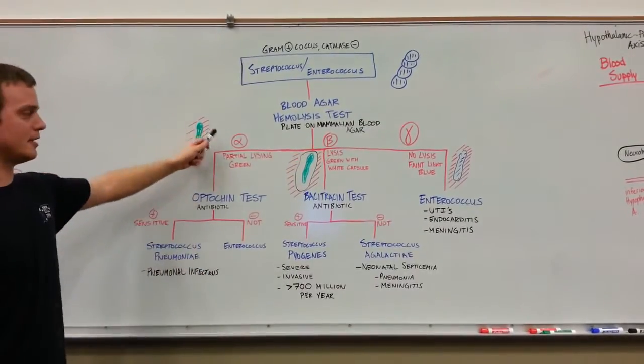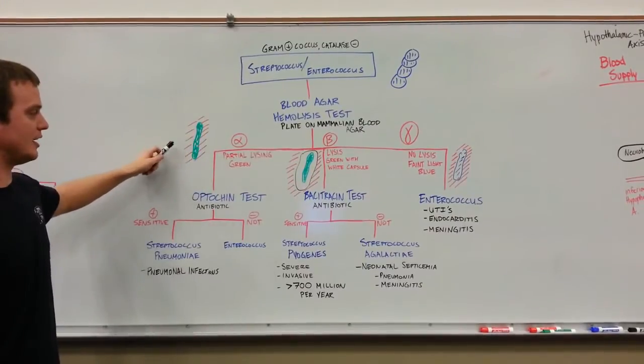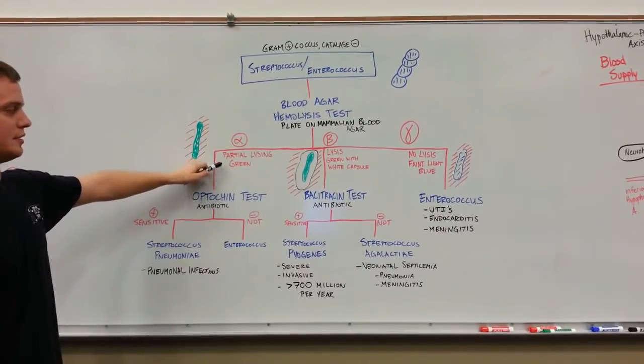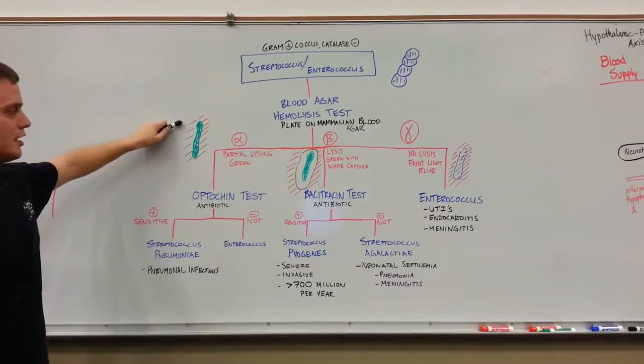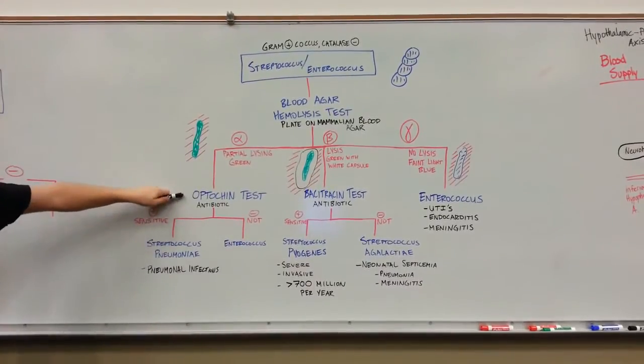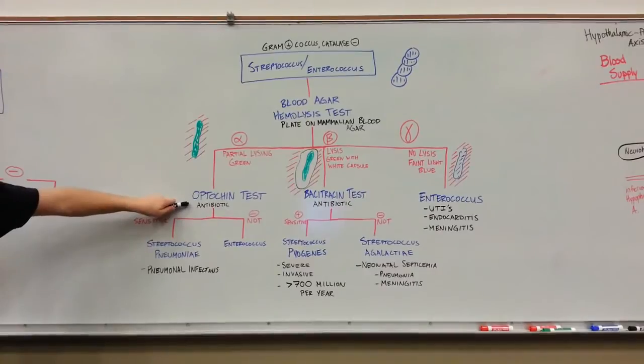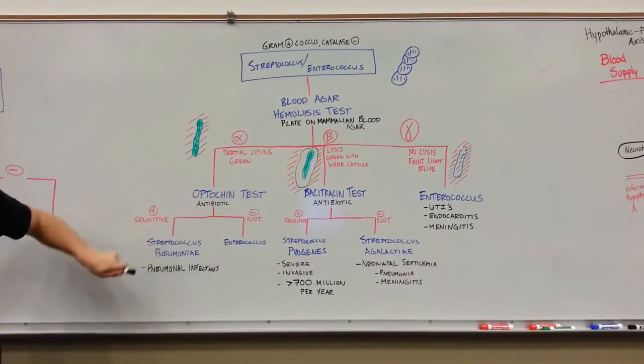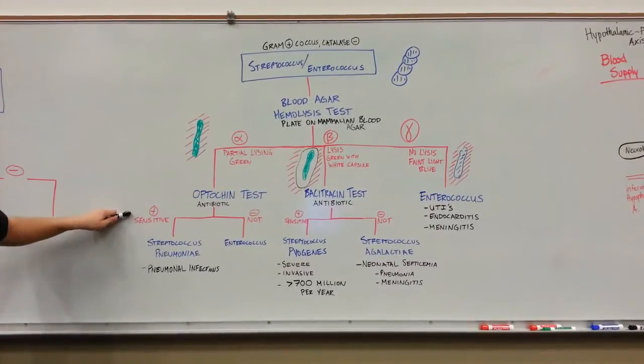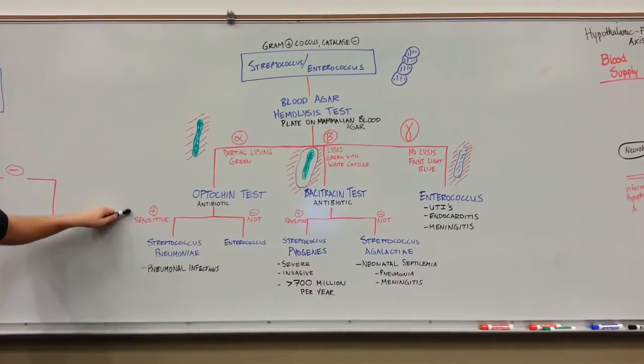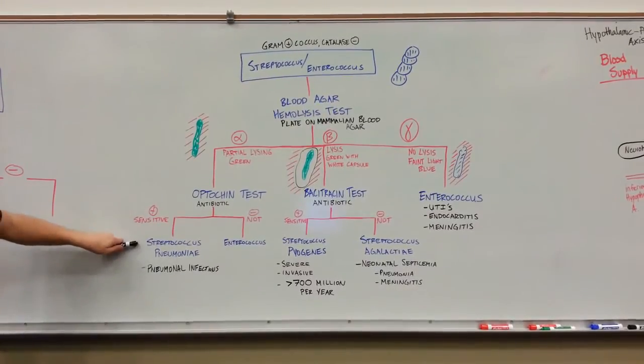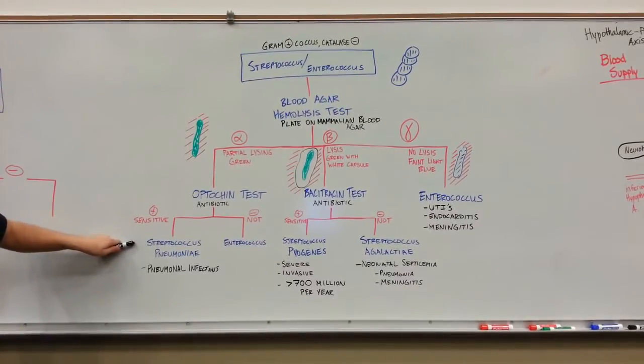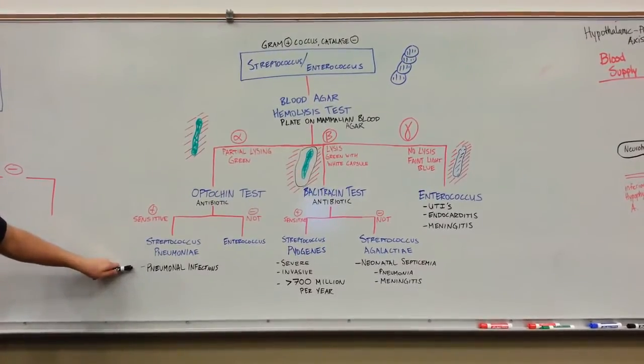If the test shows alpha hemolysis, meaning partial lysis appearing green on the agar, you'll perform an optochin test. Optochin is an antibiotic added to the organism on the plate. If the organism is sensitive to optochin, you're dealing with Streptococcus pneumoniae, commonly known for pneumonia infections.